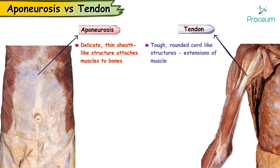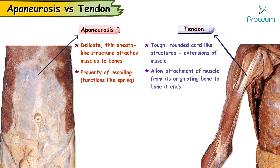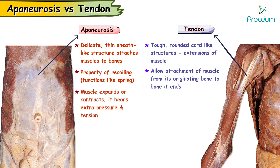Normally, tendons allow the attachment of muscle from its originating bone to the bone on which it ends. An epineurosis has the property of recoiling and hence it functions like a spring. Whenever the muscle expands or contracts, it bears all the extra pressure and tension.